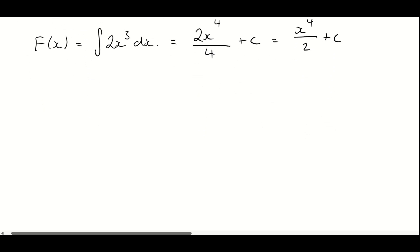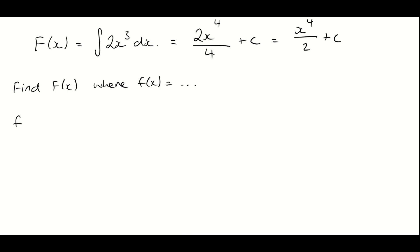We'll do a couple more examples. This time, lowercase f of X is equal to 4 times the square root of X, and we need to find capital F of X. We know that equals the anti-derivative of 4 times the square root of X. We can rewrite that as 4X to the power of a half, which gets it into that AX to the power of N form we need to anti-differentiate.